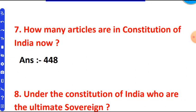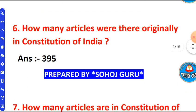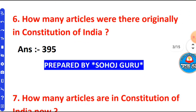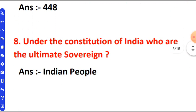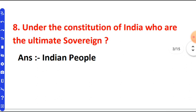The Indian Constitution originally had 395 articles. Under the Constitution of India, who are the ultimate sovereigns? The Constitution of India declares the Indian people as the ultimate sovereign.